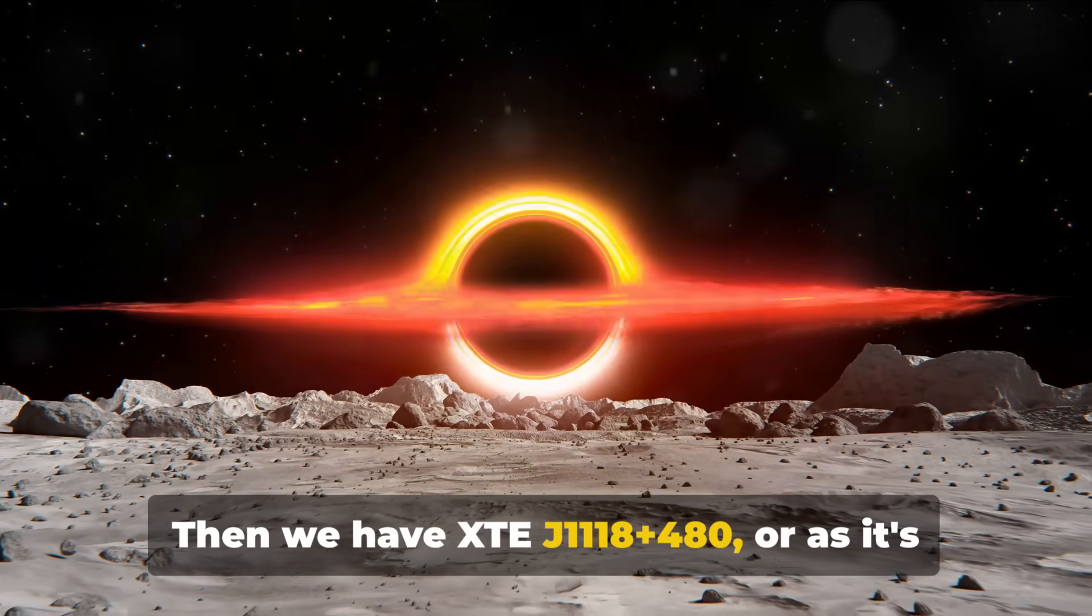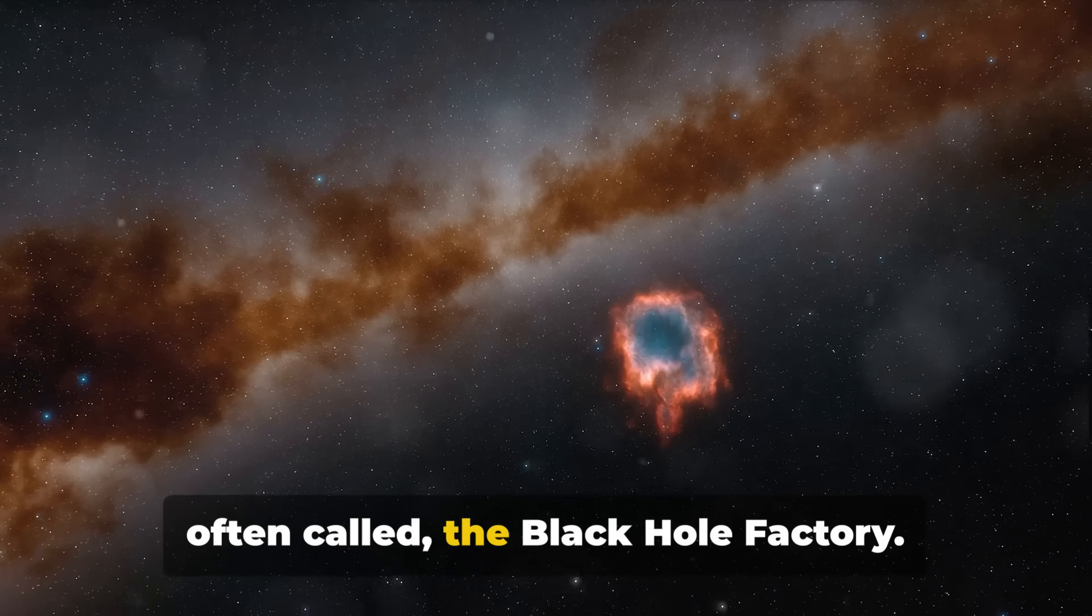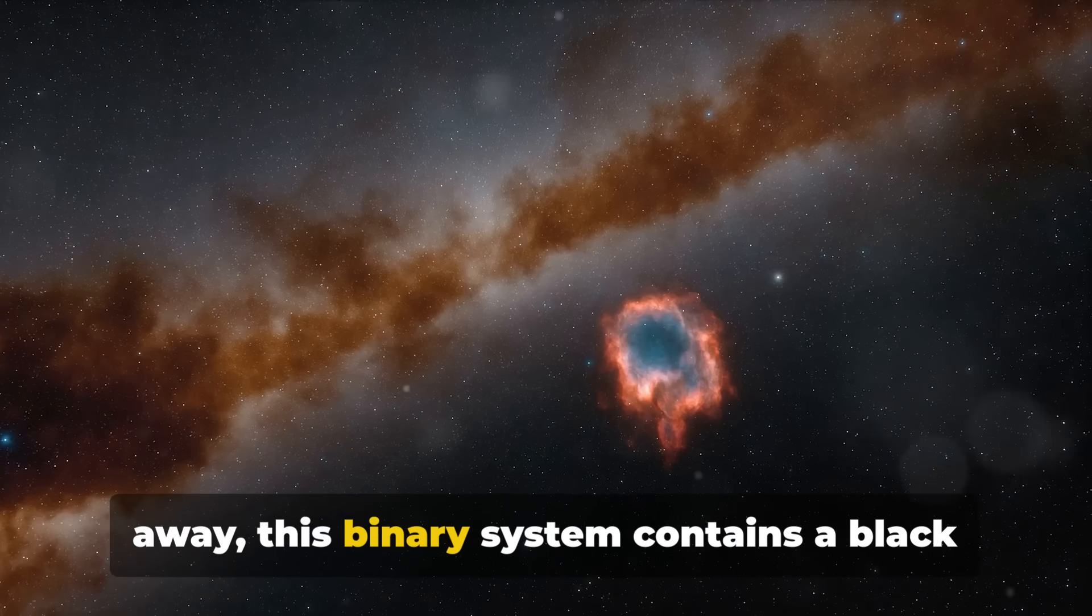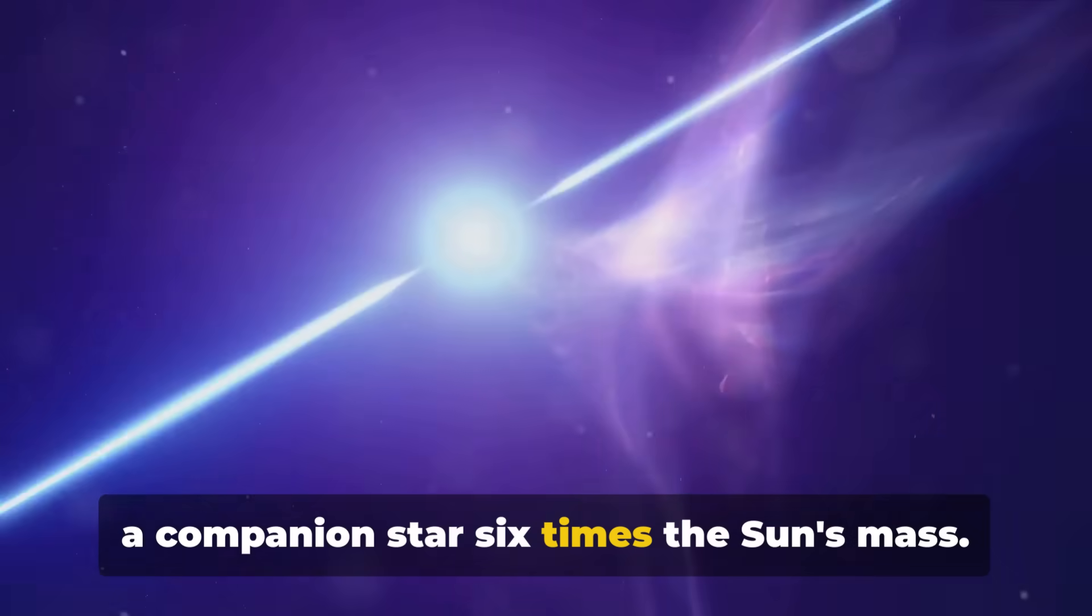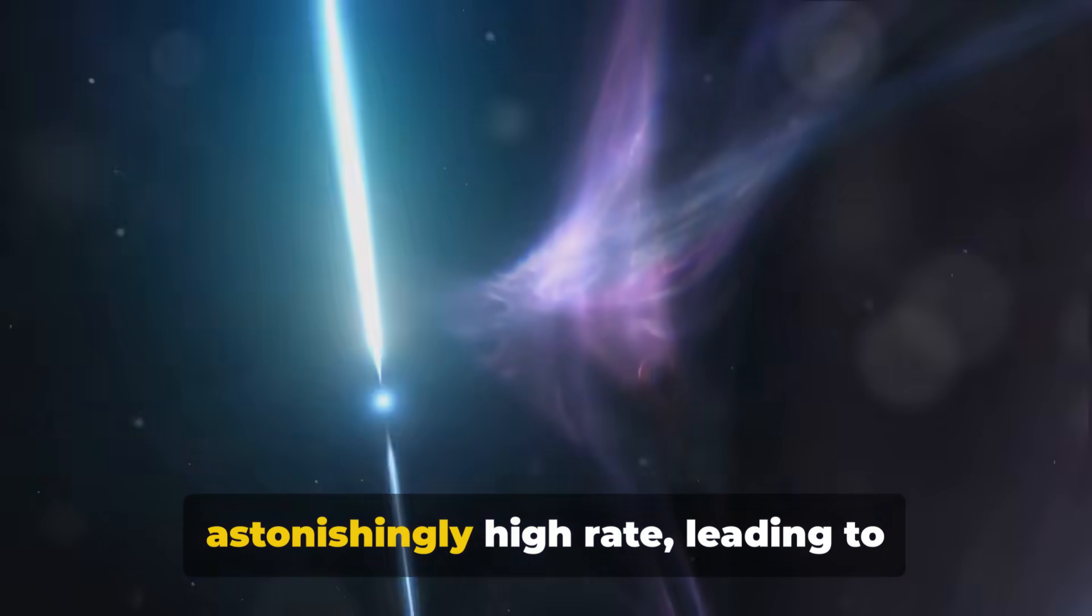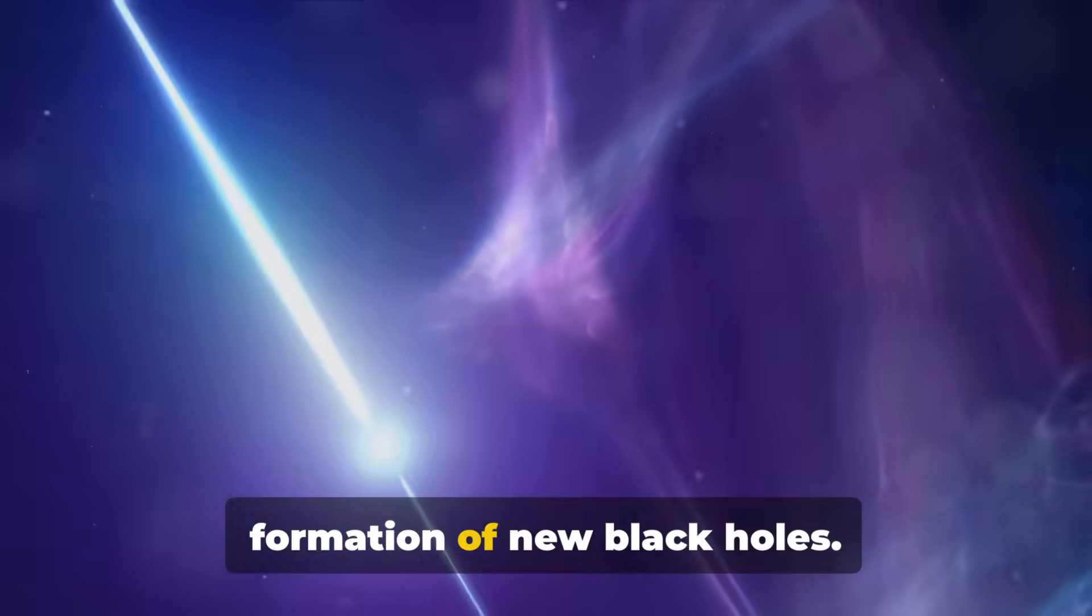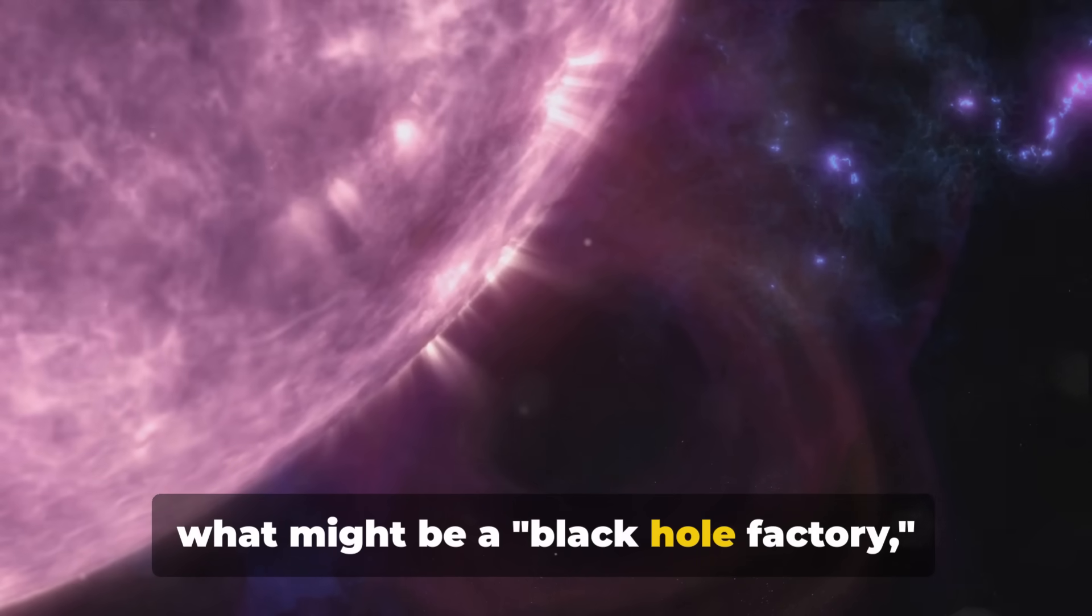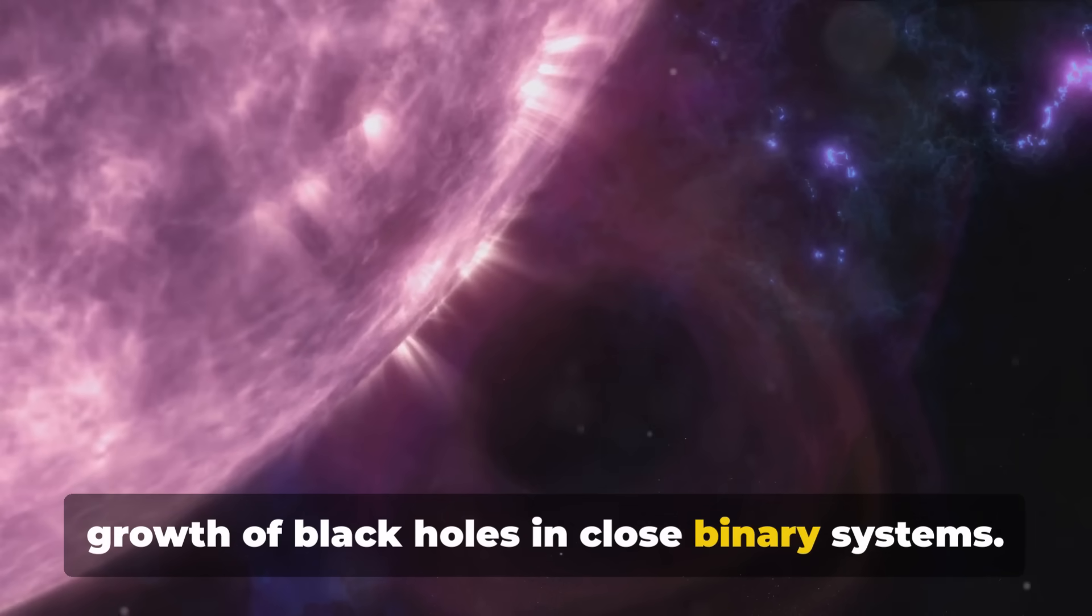Then we have XTEJ 1118+480, often called the black hole factory. Situated around 9,000 light years away, this binary system contains a black hole eight times the mass of the sun and a companion star six times the sun's mass. This star generously donates matter at an astonishingly high rate, leading to frequent outbursts and possibly the formation of new black holes. This system provides a rare glimpse into what might be a black hole factory, offering insights into the formation and growth of black holes in close binary systems.